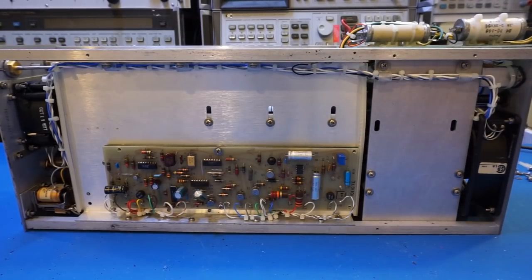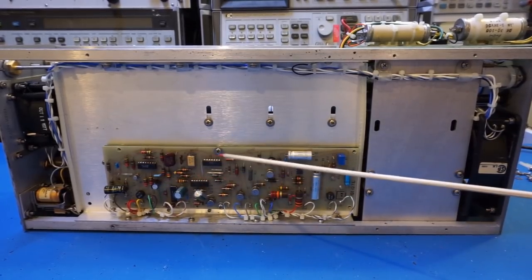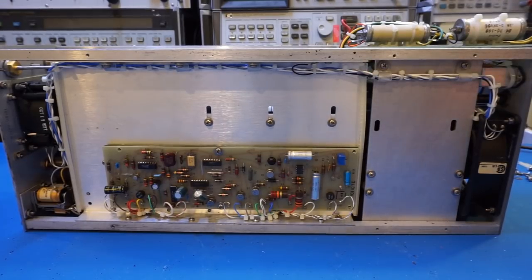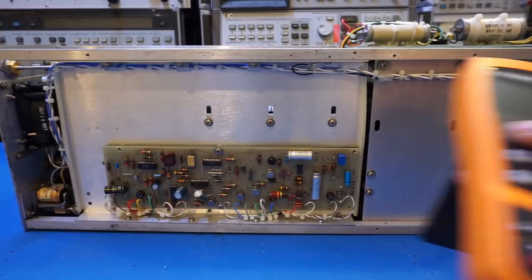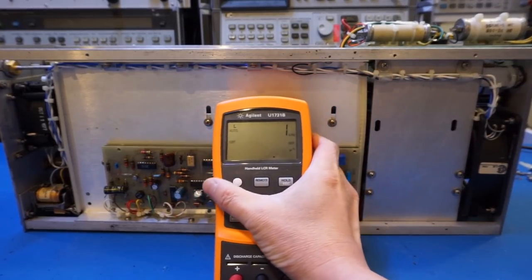So after going through that exercise surprisingly the only things I could find were just a few bad capacitors. So I went ahead and replaced them which I will show you here. Let me show you some of the measurements of the capacitors that I took off and replaced using this Agilent LCR meter here.